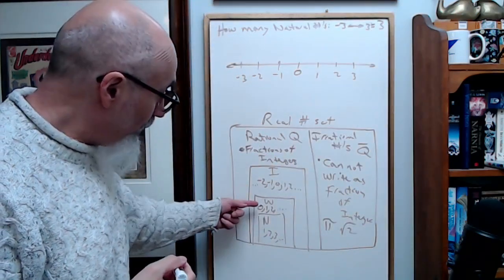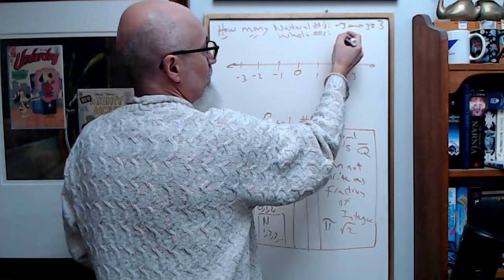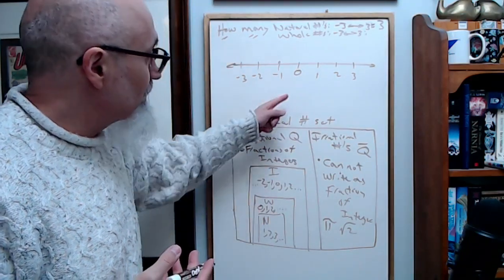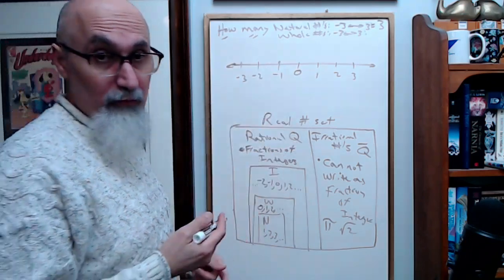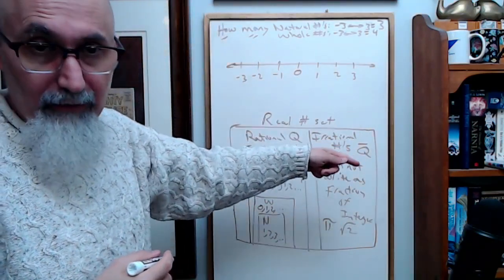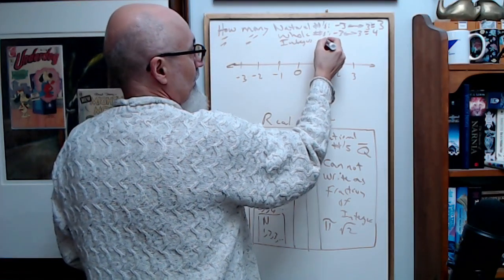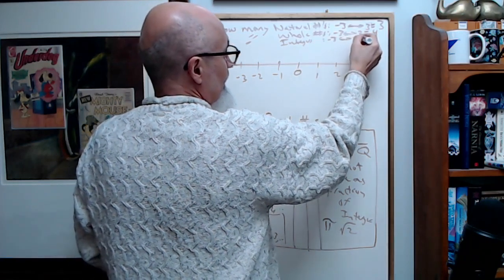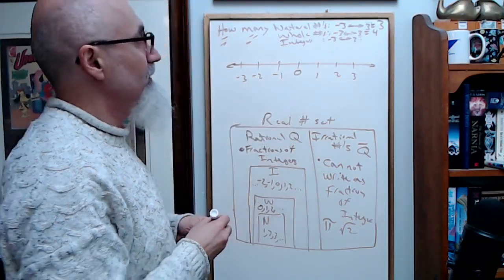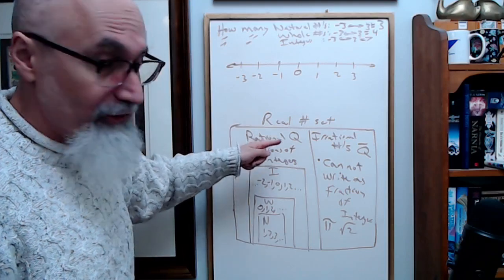How many whole numbers are there between negative three and three? Whole numbers include zero, so we get four whole numbers. And how many integers between negative three and three? Integers are positive and negative whole numbers, so: negative two, negative one, zero, one, two — that's seven integers between negative three and three.